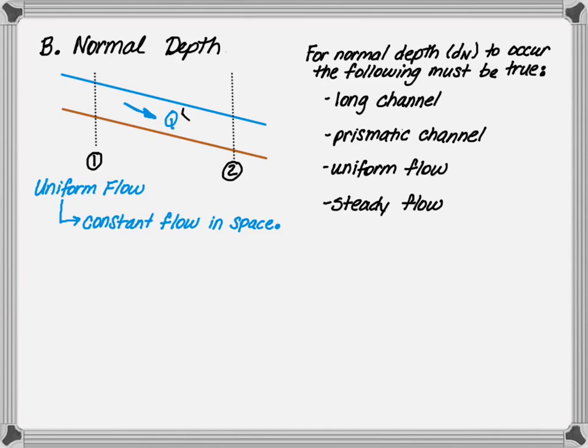For normal depth to occur, the following must be true. First, the channel needs to be long. This is the case because over a long distance, the flow within a channel will try and reach normal depth as long as nothing obstructs or causes a change to the flow.